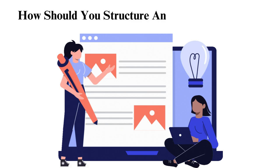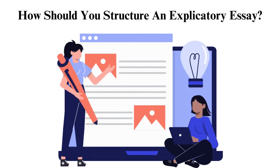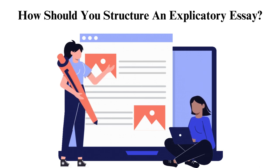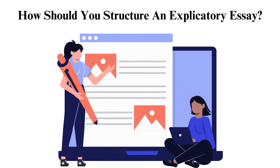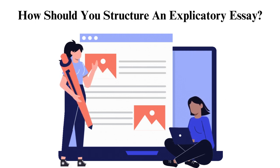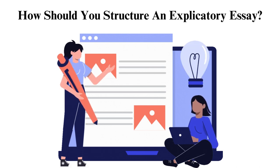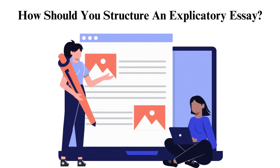How should you structure an explication essay? An explication essay should adhere to an essay's general structure: introduction, body, and conclusion. In the introduction, you must start creatively to draw your reader's interest. Then give brief and concise background information about the literary text, touching on the author, title of the literary piece, the main themes discussed, and other crucial details like main characters, setting, etc. You then close the introduction with a thesis.